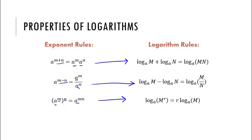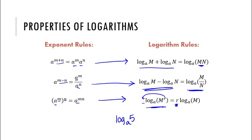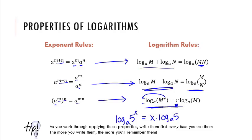When multiplying, if you've got log base a of mn, you can separate that out as two logarithms using the addition property. When dividing two things, you can separate that out using the subtraction property. This is a crucial one: if you have log base a of something to a power, you can move that power right in front of the logarithm. For example, log base a of 5 to the x power — this property allows you to move that x in front, getting x outside of the logarithm.